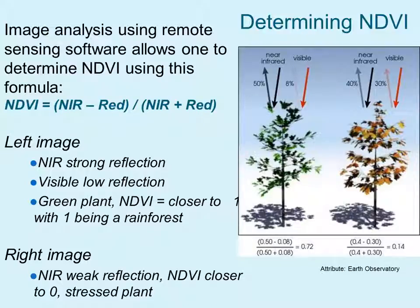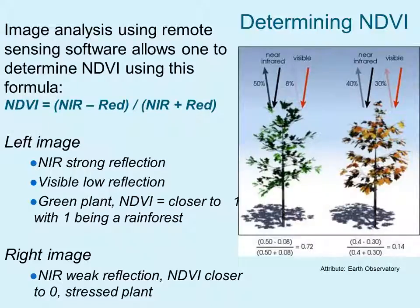In the left image you can see near infrared is strongly reflected while the visible has a low reflection. In healthy vegetation the NDVI is closer to 1, with 1 representing a rainforest. In the right image, near infrared has a weak reflection and NDVI is closer to 0, representing a stressed plant.